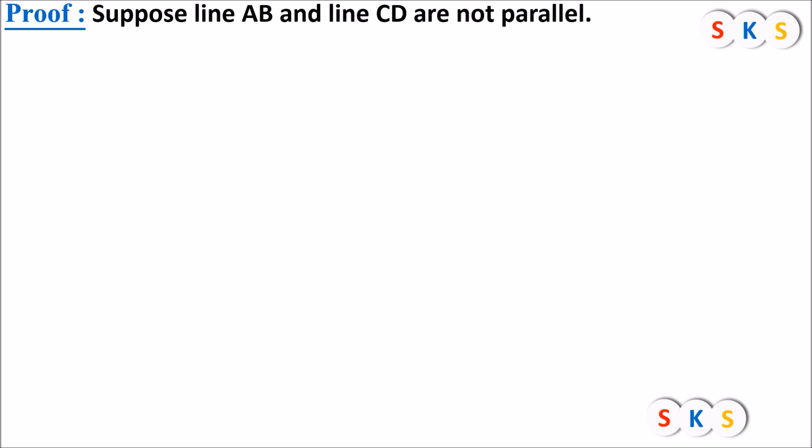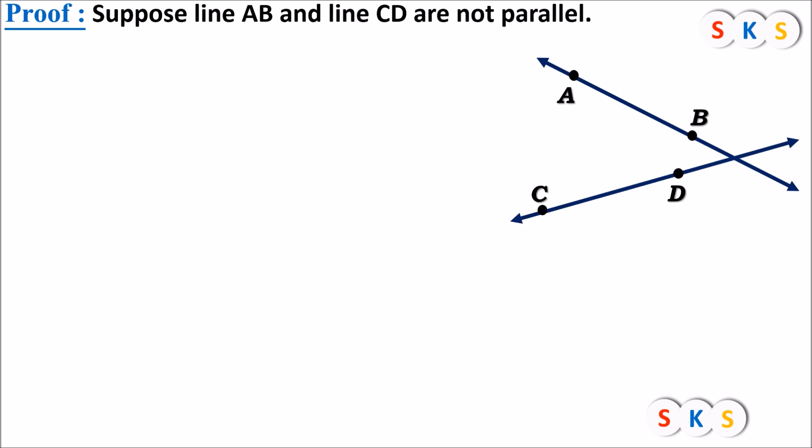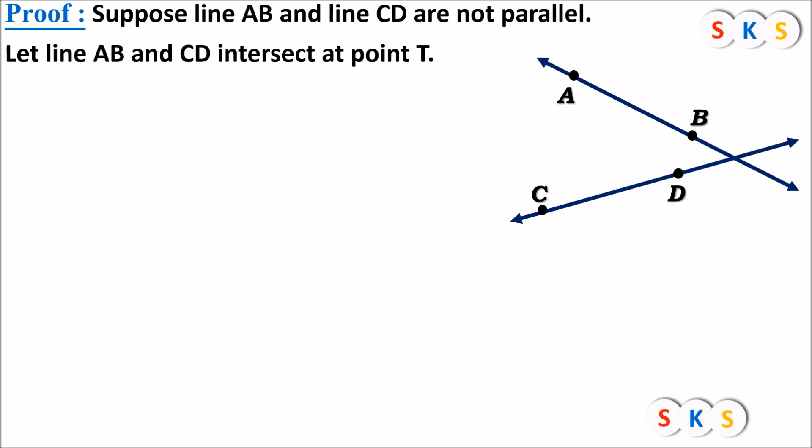We will suppose that line AB and line CD are not parallel. We are asked to prove line AB is parallel to line CD, but I am going to consider they are not parallel. If they are not parallel, they will intersect. Let the intersection point of those two lines be T, as seen in the figure.